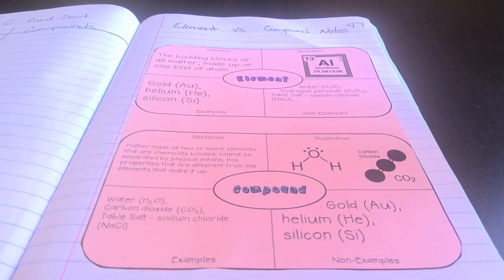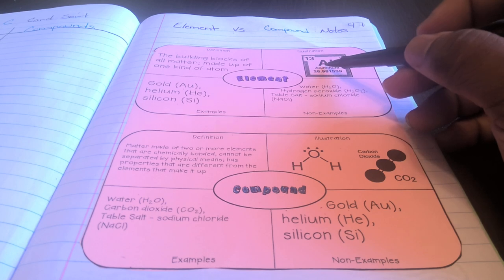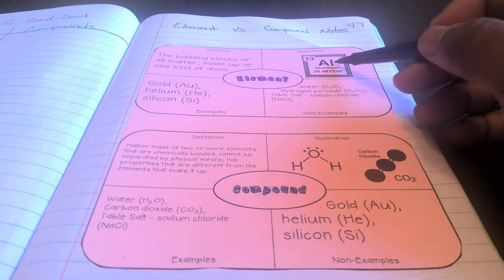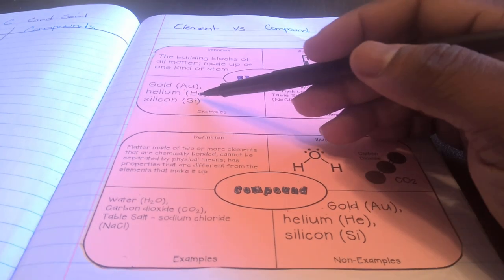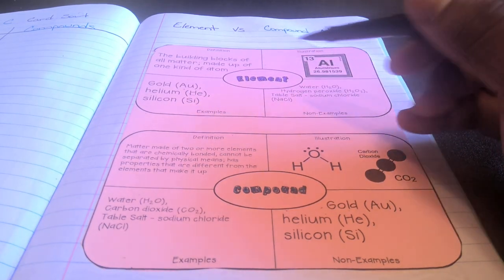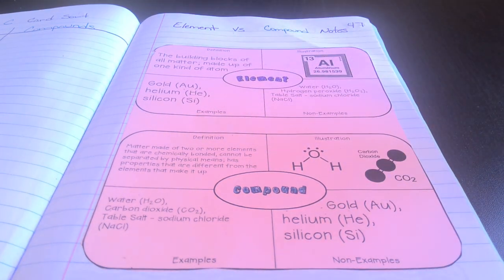Elements are represented by a symbol which is one or two letters. The first letter will always be a capital letter. As we see in aluminum, the A is capital, the L is lowercase. Gold, the A is capital, the U is lowercase. If we had hydrogen, it would just be a capital letter, but the first letter will always be a capital letter.